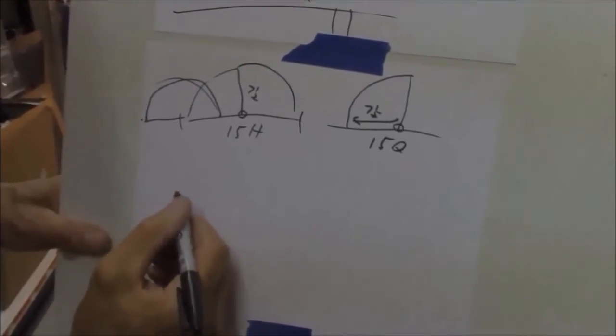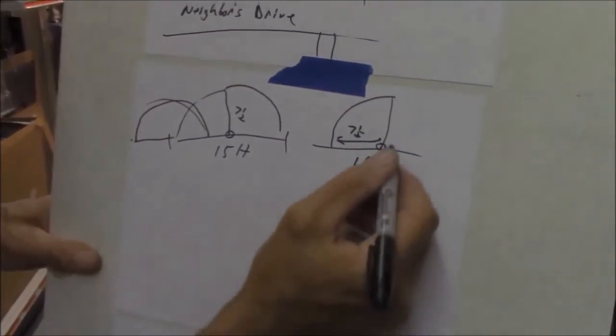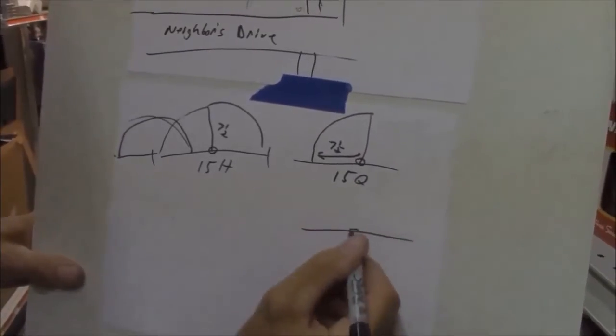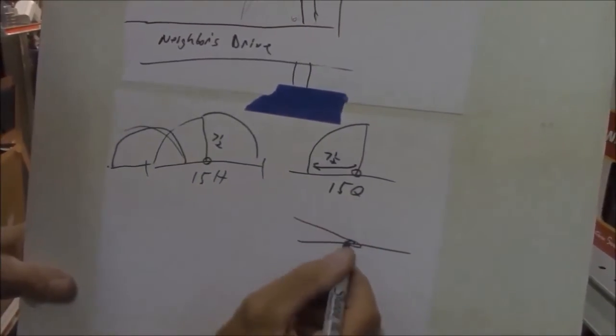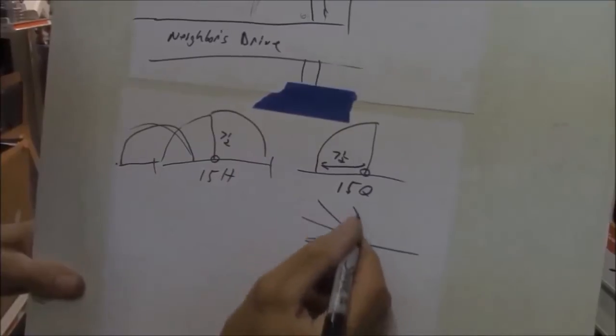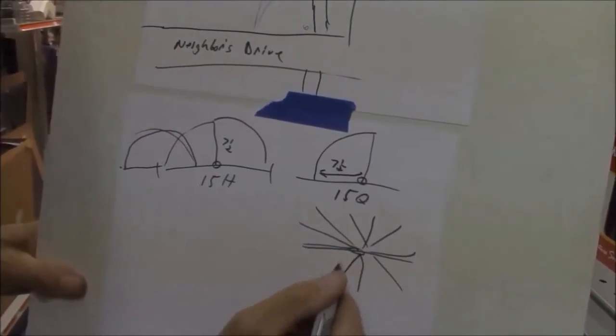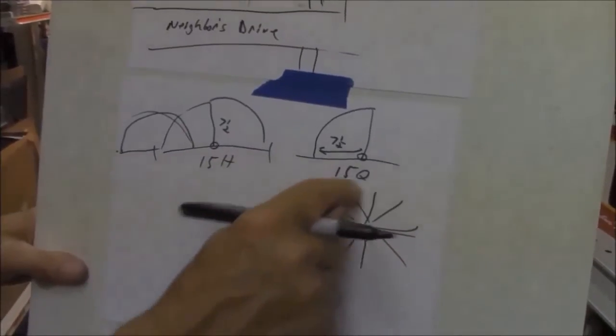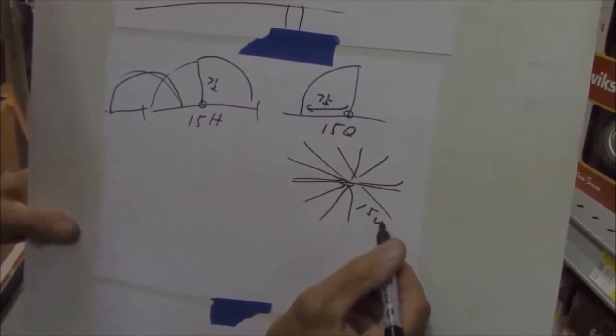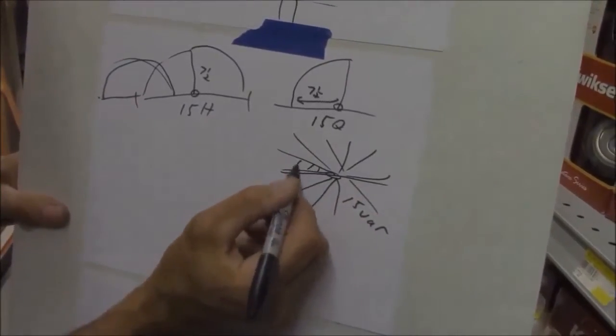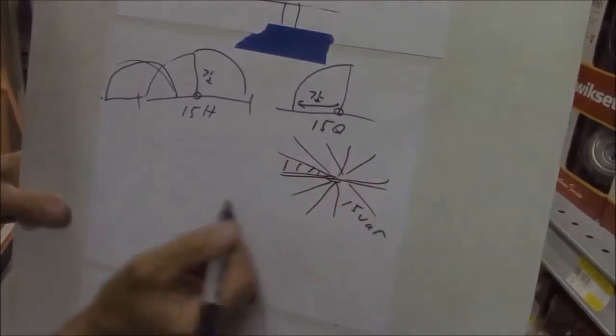It comes in a variable. The 15VAR, I can adjust it from a sliver incrementally all the way up to just about a full. So it goes all the way around. So it's a 15VAR. And it's adjustable. Kind of cool. So I can do just this area. Or I can do this whole area.